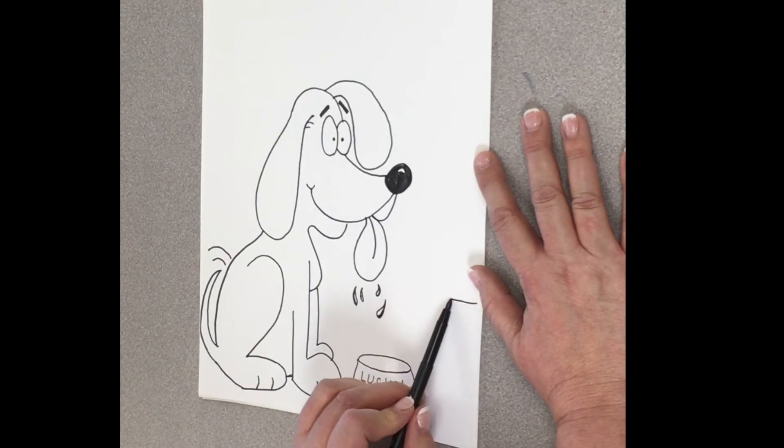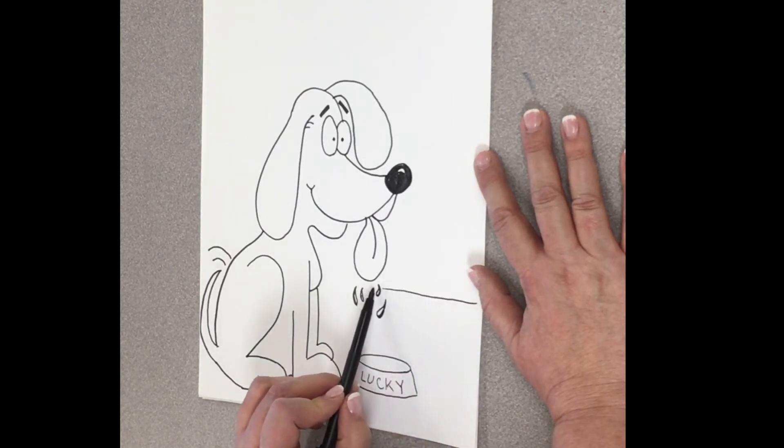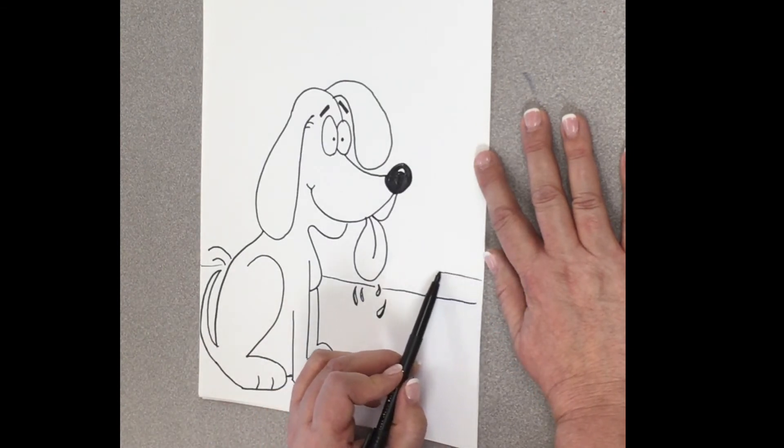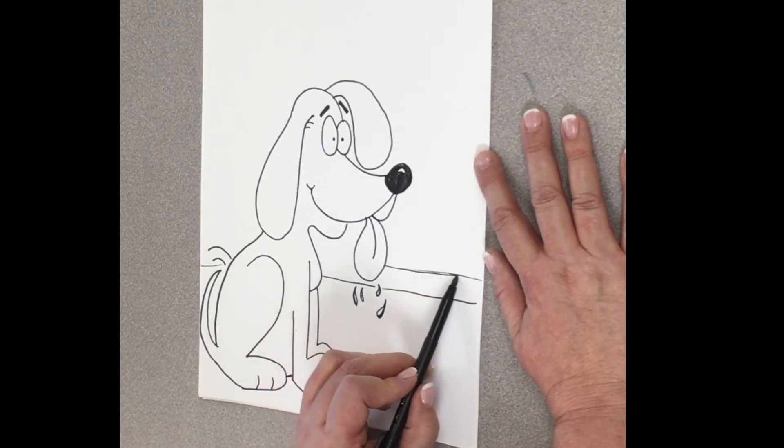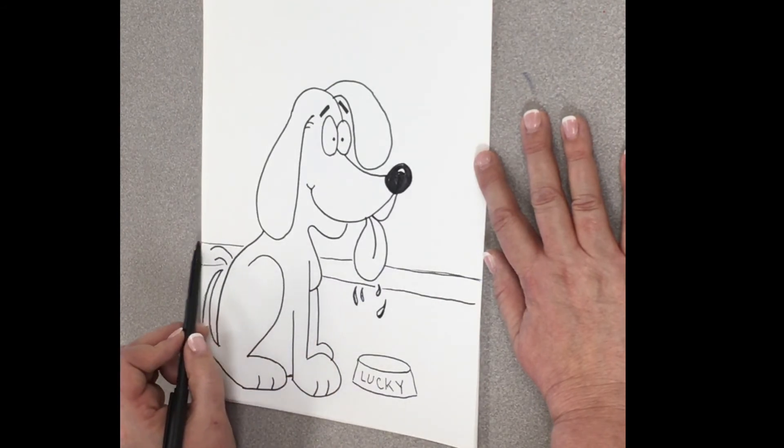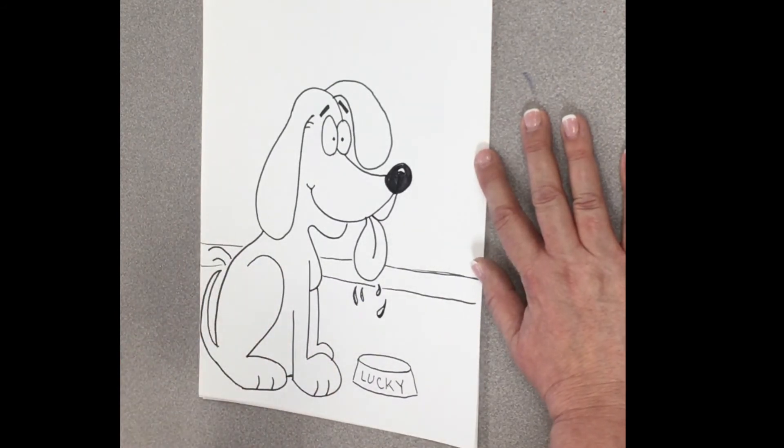So, I'm going to put a line right here. Okay. And, I'm going to put another line right here. All right. Because, I have some kitchen cabinets. I'm just thinking of what I know.